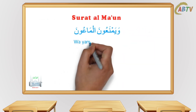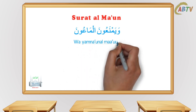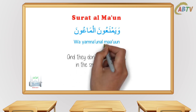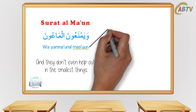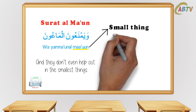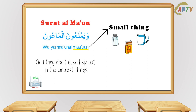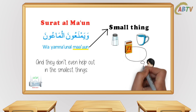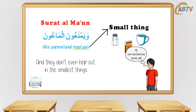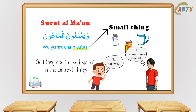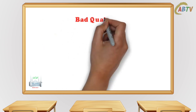The next verse says: 'Wa yamna'oonal-maa'oon' — and they don't even help out in the smallest things. The word Ma'on means a small thing which is not worth much money, that neighbors usually take from each other, like some salt, matches, a cup, and so on. If your neighbor came knocking on your door asking for some salt, you would at least give them some if you had it, but these people won't even give a small amount of anything.